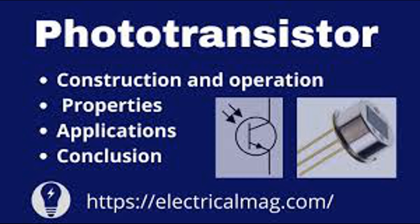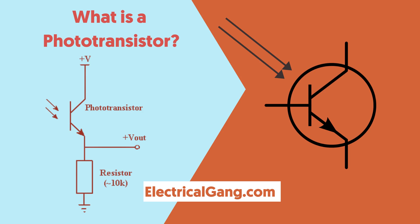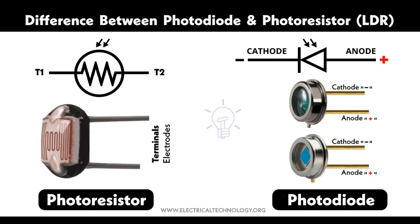Output signal: The output current flowing from the collector to the emitter is directly proportional to the intensity of the incident light. The more intense the light, the more electron-hole pairs are generated and the larger the output current. The amplified current flows through the collector-emitter path, producing an output signal. In summary: light enters through the transparent window, generates electron-hole pairs, creates a small base current, which is amplified into a larger collector-emitter current I_C proportional to the incident light intensity.